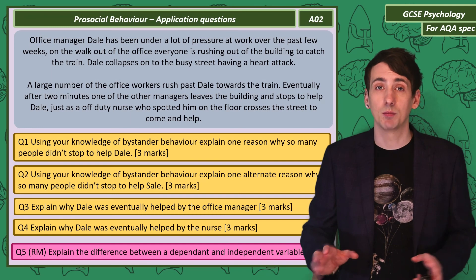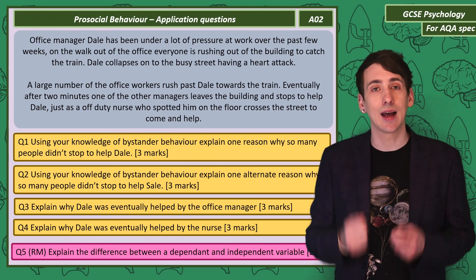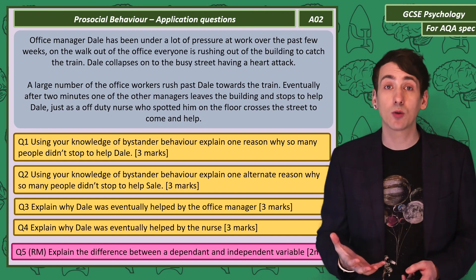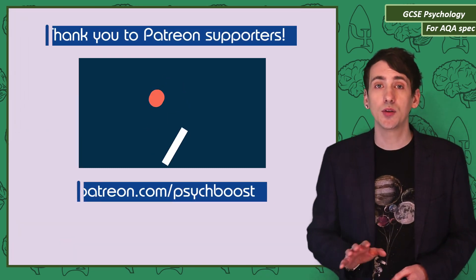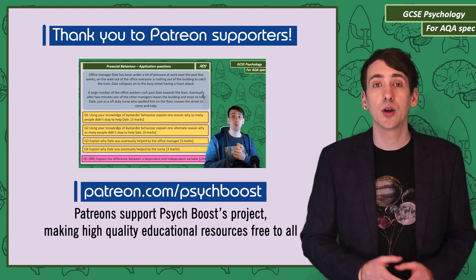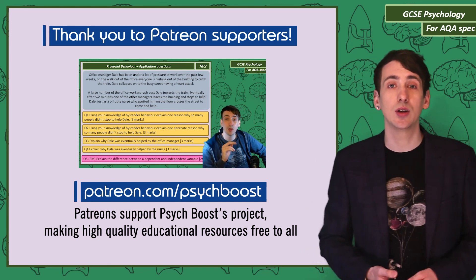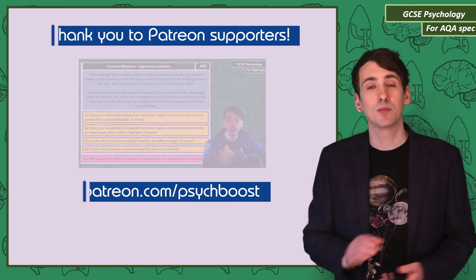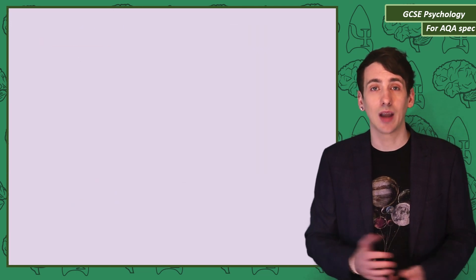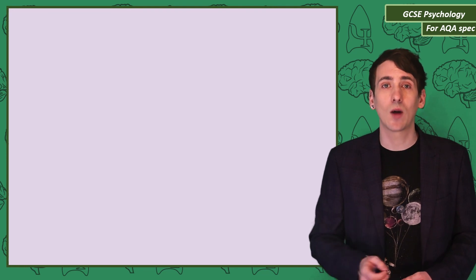We've covered the content, but you'll need to be able to use all that information to actually answer questions. Here are five questions to test your skills — pause the video and give them a go. For those who support me on Patreon, I've put together an additional bonus video showing you how to answer these properly. For everyone else, thanks for watching — like, subscribe, and I'll see you in the next video on Social Influence: Crowd and Collective Behaviour.